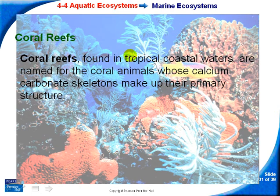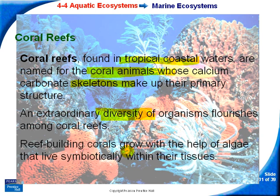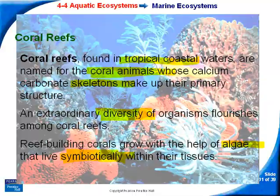Coral reefs are found in the tropics and are made up of coral animals whose skeletons form the reef structure. They host a large diversity of organisms. The reefs grow with algae in a symbiotic relationship — the algae lives within the tissues of the coral.